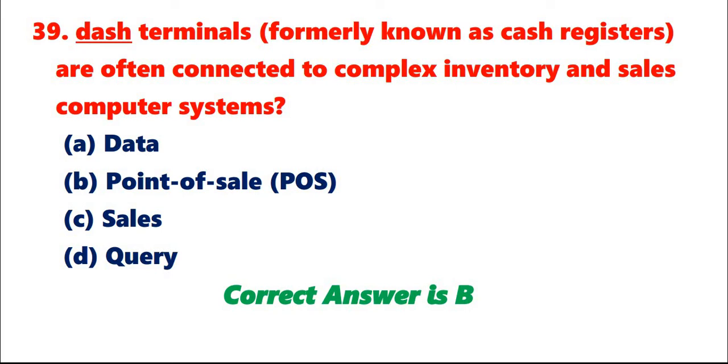Question 39: Terminals, formerly known as cash registers, are often connected to complex inventory and sales computer systems. A. Data. B. Point of sale. C. Sales. D. Query. Correct answer is B.